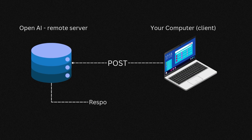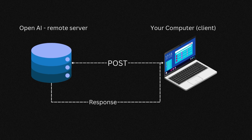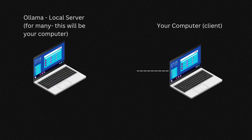When you integrate OpenAI into your application, what you're doing is making a POST request to a remote OpenAI server — the computers hosted by OpenAI that hold all of the large language model and associated infrastructure. So you're sending your data — a prompt or something — to those computers, and that computer delivers a response back to your local computer, which we'll call your client.